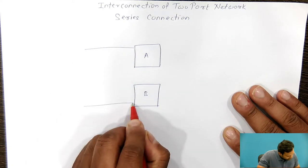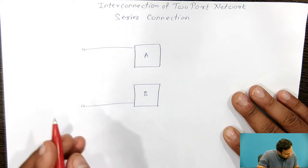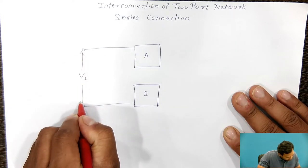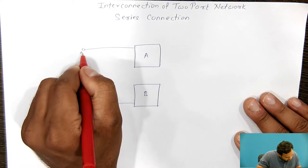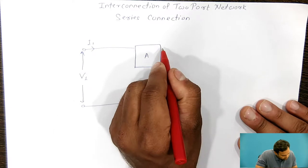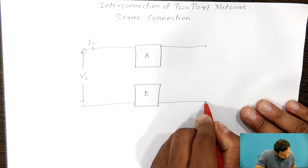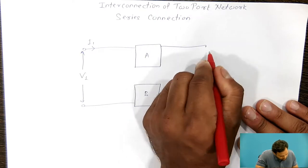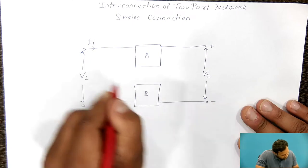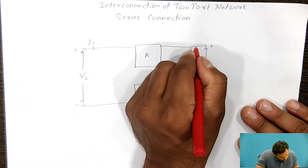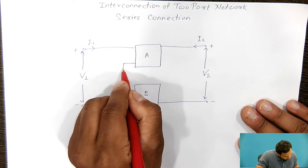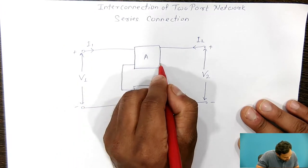This is the input part. The input voltage is represented by V1 and the input current by I1. Similarly, the output voltage is represented by V2 and the output current by I2. These two networks are connected in series.